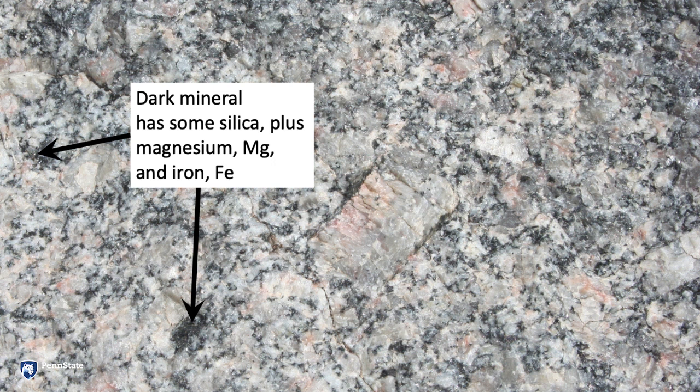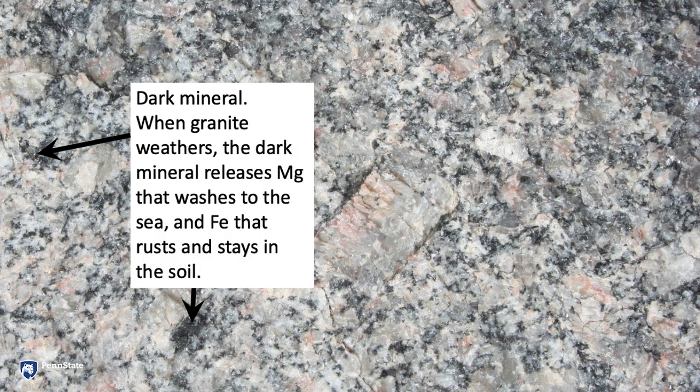We have now named eight elements: oxygen, silicon, aluminum, iron, calcium, sodium, potassium, and magnesium. That order is the eight commonest elements in the crust of the Earth — they make up more than 99% of the crust.